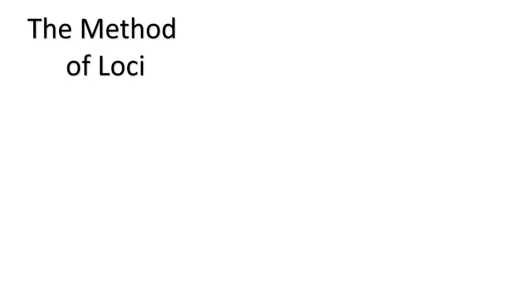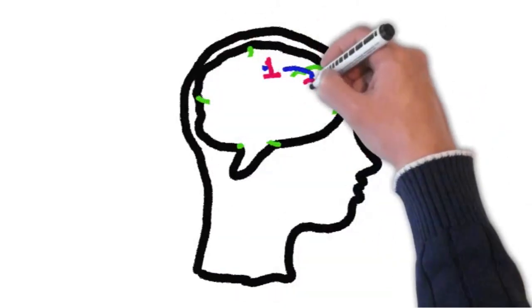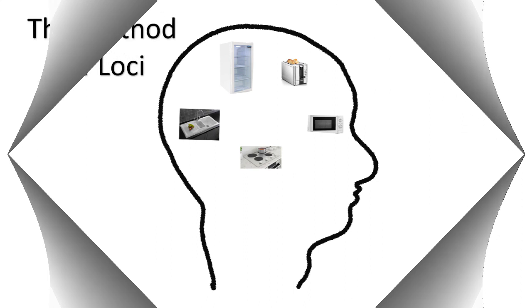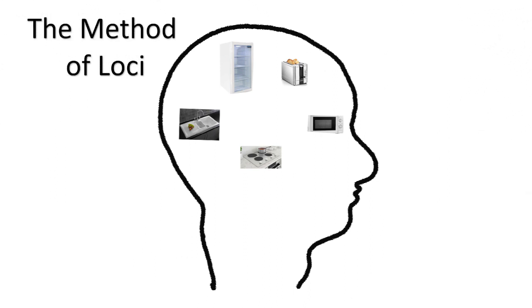One of the key methods of learning or remembering things is what we call the method of loci. This has been used for centuries by the Greeks and the Romans, sometimes referred to as the memory palace. What you do is have some places that you're familiar with — somewhere you walk around and know the different locations on route. Let's take something simple like the kitchen.